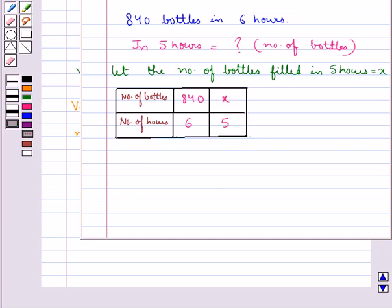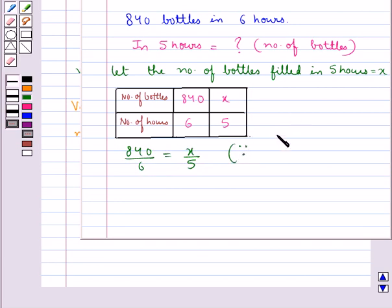More the number of hours, more bottles will be filled, and lesser the number of hours, less bottles would be filled. So the number of bottles and the number of hours are in direct proportion. Therefore, 840 upon 6 is equal to x upon 5, since if x and y are in direct proportion then x1 upon y1 is equal to x2 upon y2.